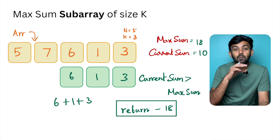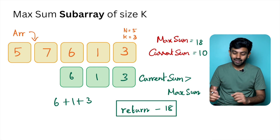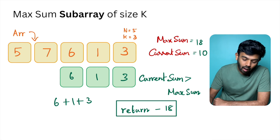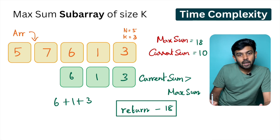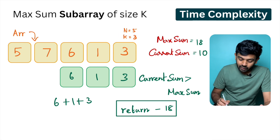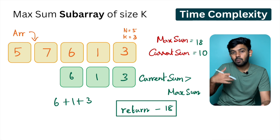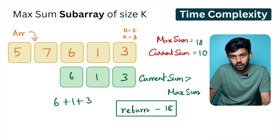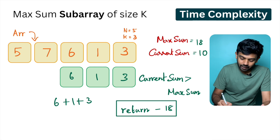This brute force approach is O(n²). The total array size is n, and for each starting position we compute the sum of k elements — that inner computation is k times — giving us an O(n²) time complexity.